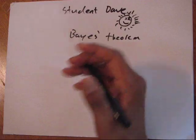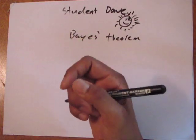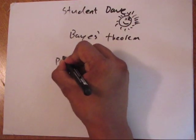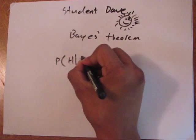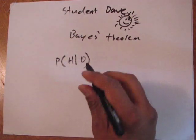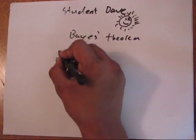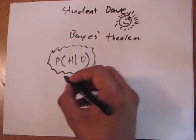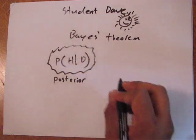The whole point of Bayes is to basically have some data and then make some claim about the probability of some hypothesis. You have some data and you want to know what is the probability of a particular hypothesis given your data. This is what you're after, your gold standard. This is what's called the posterior, the posterior probability.